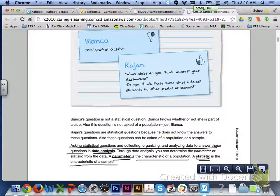Asking stat questions and collecting, organizing, and analyzing data to answer those questions is called data analysis. Through data analysis, you can determine the parameter or statistic from the data. A parameter is the characteristic of a population, and a statistic is the characteristic of a sample.